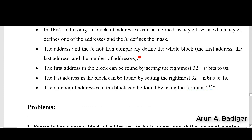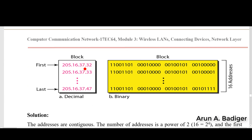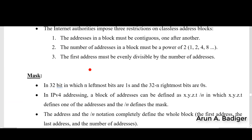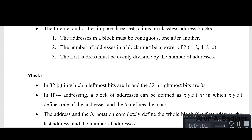For example, if the first address is 205.16.37.32 and we have 16 addresses, when I convert this complete 32-bit binary number to its decimal equivalent and divide by 16, it must be completely divisible. These are the rules for assigning a classless IP address.